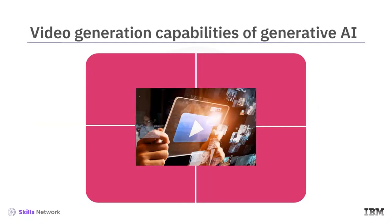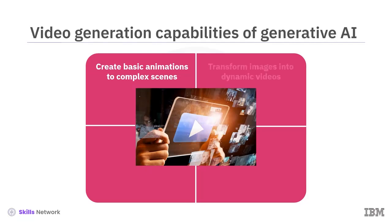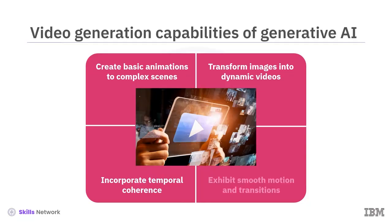Generative AI models can create dynamic and lucid videos ranging from basic animations to complex scenes. These models transform images into dynamic videos by incorporating temporal coherence. In natural language processing, temporal coherence refers to the consistency and continuity of meaning or context over time, enabling these models to exhibit smooth motion and plausible transitions in videos.